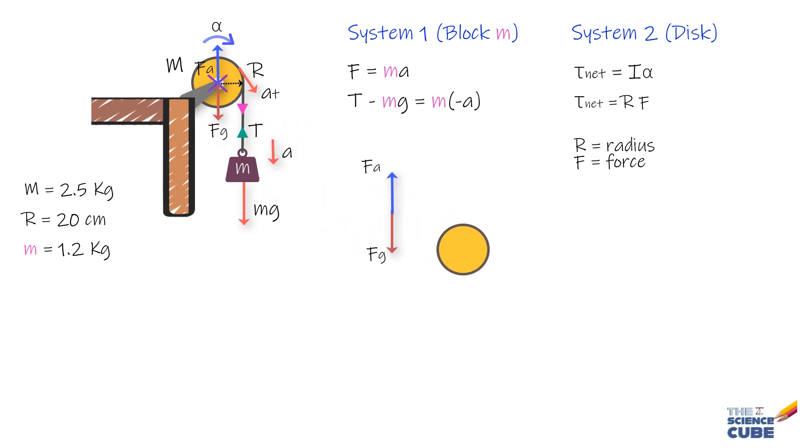We can see that there are three forces acting on the disc. The gravitational force, the force exerted by the axle, and the tension T from the cord.